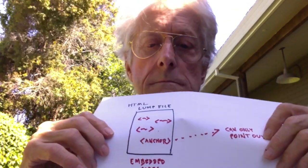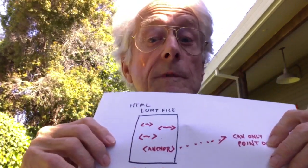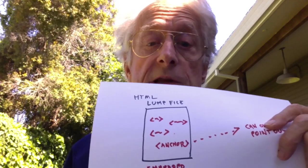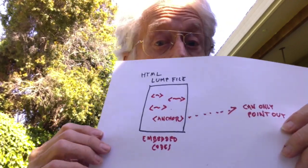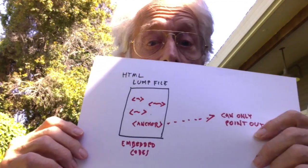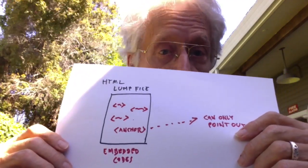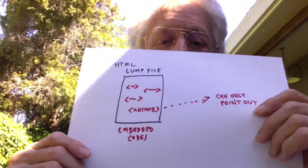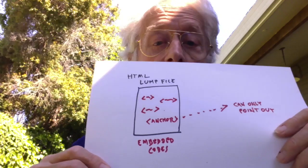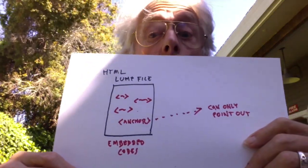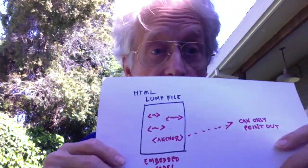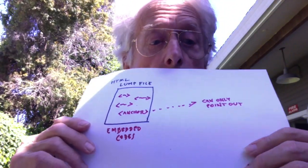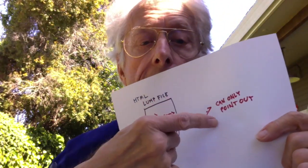Tim's original HTML files were based on SGML. It was a natural choice for Tim to use what was already there, and he chose to put the links into that lump inside angle brackets, just like the paragraphs, italics, and other formatting that SGML was already putting between angle brackets. Putting the links into the lump means they can only be one-way, pointing outward — they can't be two-way.